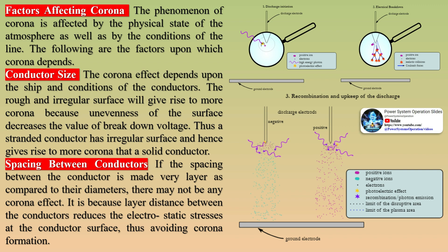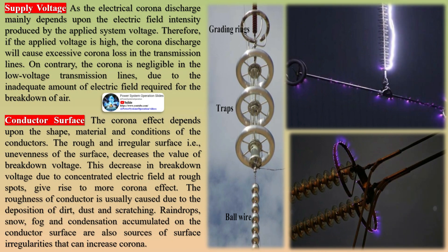Factors affecting corona: the phenomenon of corona is affected by the physical state of the atmosphere as well as by the conditions of the line. Regarding conductor size, the corona effect depends upon the shape and conditions of the conductors. A rough and irregular surface gives rise to more corona because unevenness of the surface decreases the value of breakdown voltage. A stranded conductor has an irregular surface and hence gives rise to more corona than a solid conductor. Regarding spacing between conductors, if the spacing is made very large compared to their diameters, there may not be any corona effect, because larger distance reduces the electrostatic stress at the conductor's surface.